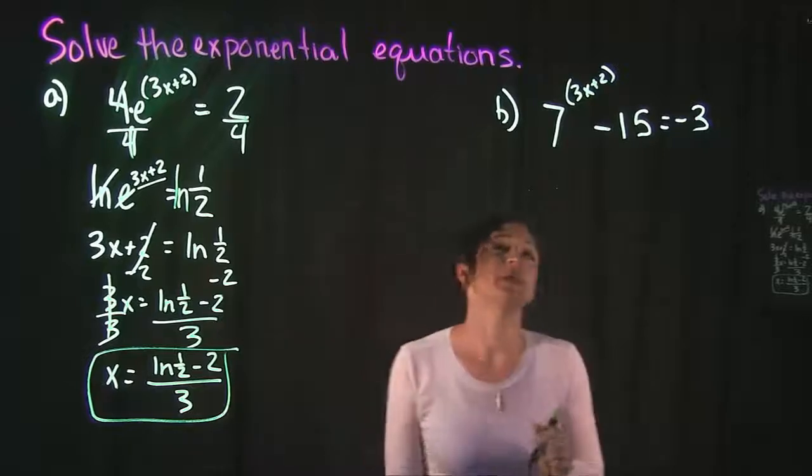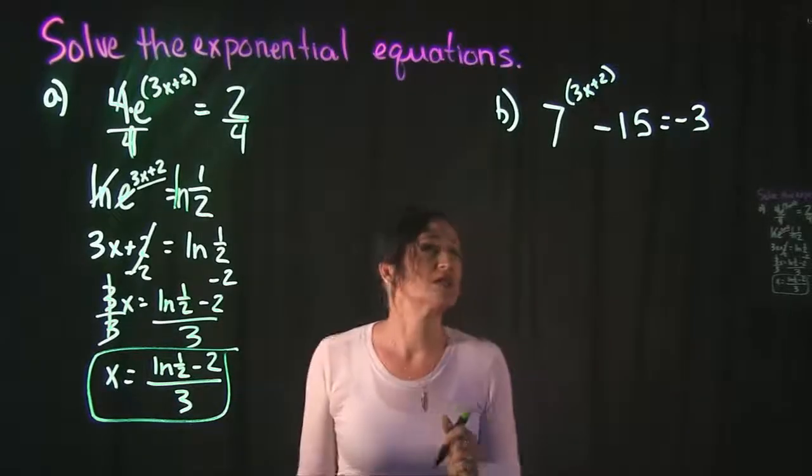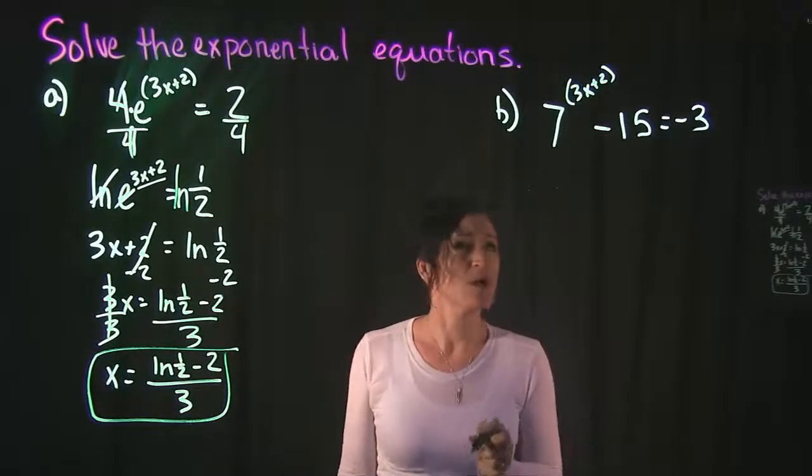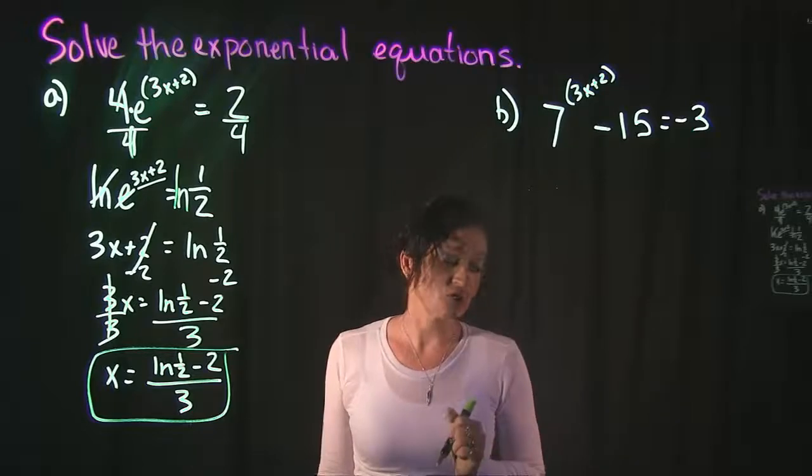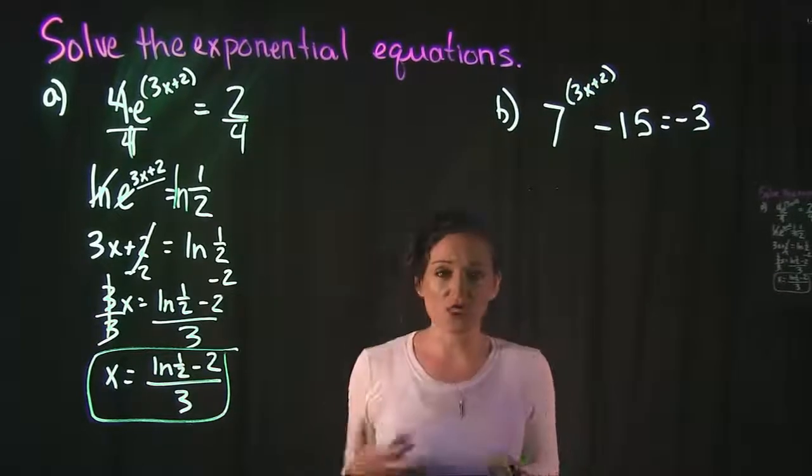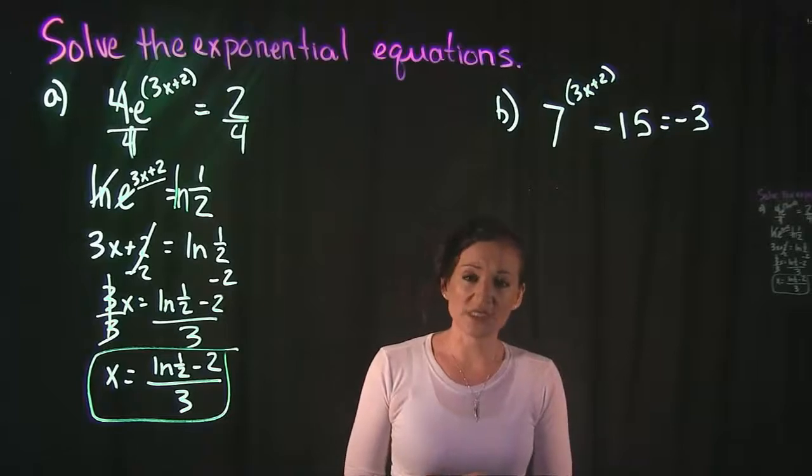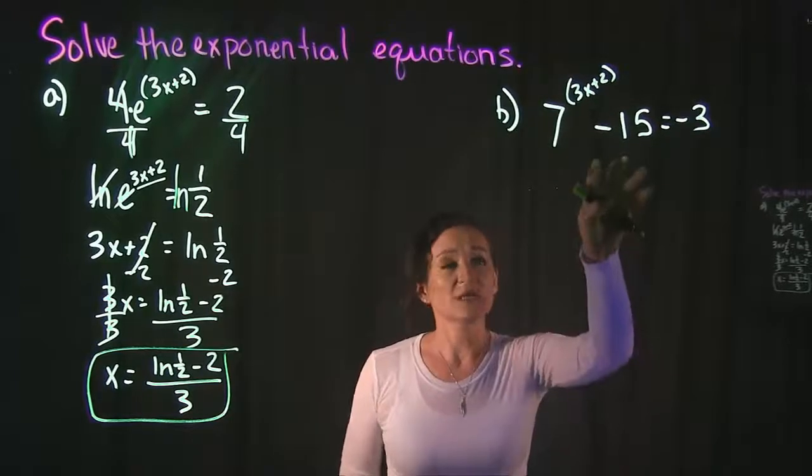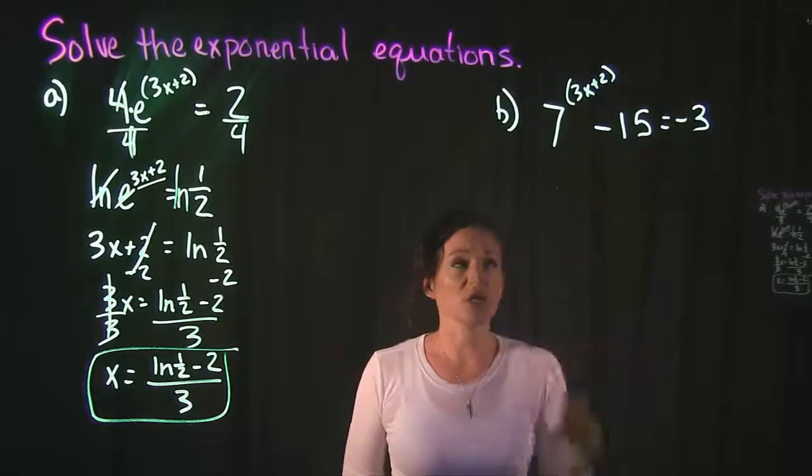Moving on to example B. We have 7^(3x+2) - 15 = -3. So we want to get our exponent completely by itself on one side of the equation.